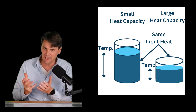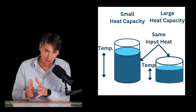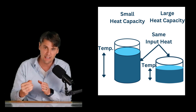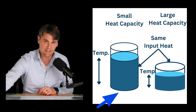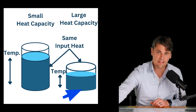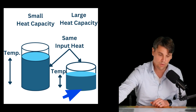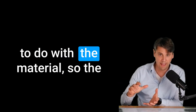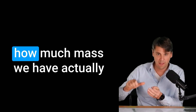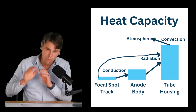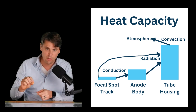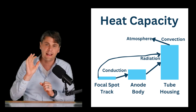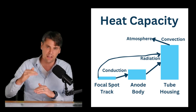What's the capacity to dump heat into this x-ray tube? If it has a relatively small heat capacity and you put the same amount of heat energy in, the temperature is going to go up a lot. As shown schematically here, in both cases we're adding the same heat. In one case it has a small heat capacity so the temperature goes up a lot; in the other it has a large heat capacity so the temperature only goes up a little bit. The heat capacity basically just has to do with the material — the specific heat of the material and how much mass we have to distribute that heat over.